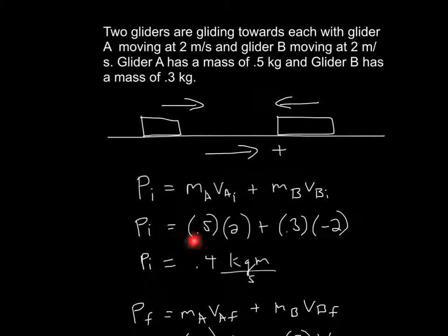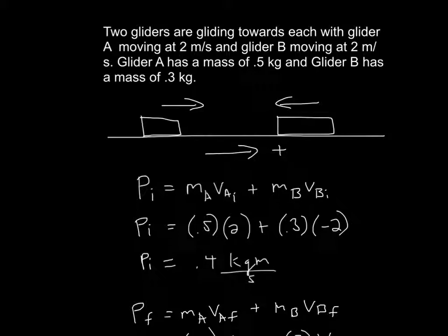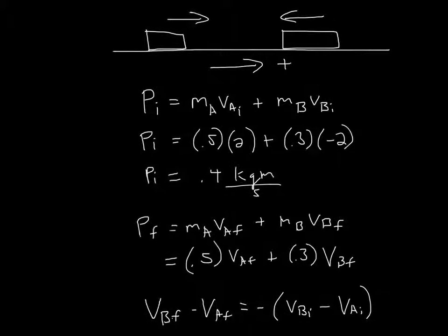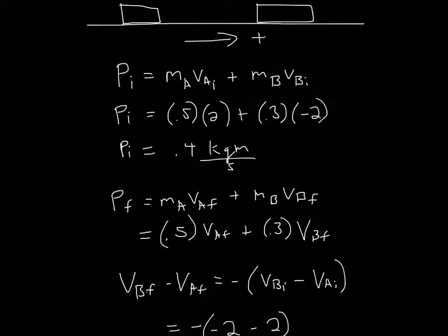So if you solve this, it'll become 0.4. The initial momentum is 0.4, and the initial momentum has to equal the final momentum, and that'll come in handy later.